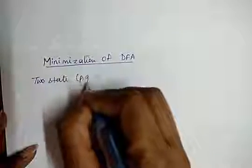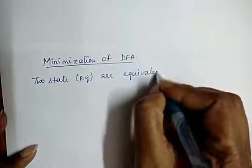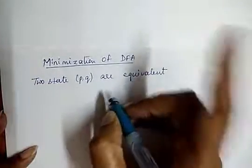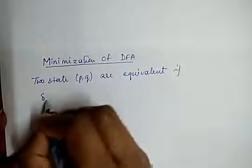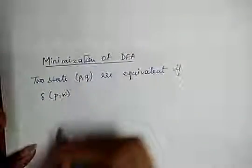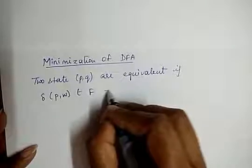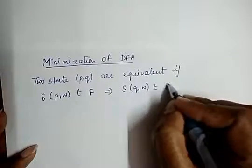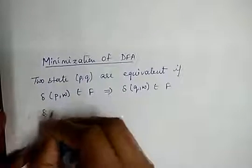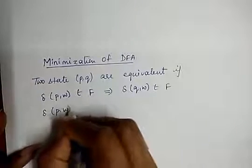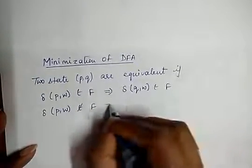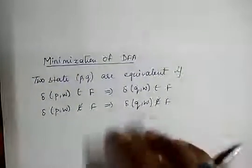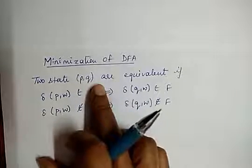The two states P and Q in a DFA can be replaced by a single state if: the transition function of P with input W belongs to one of the final states, and equivalently the transition function of Q with input W also belongs to one of the final states F. The second condition is if the transition function of P with input W does not belong to a final state, it is the same as the transition function of Q with input W not belonging to a final state. If these two conditions are fulfilled, then P and Q are equivalent.